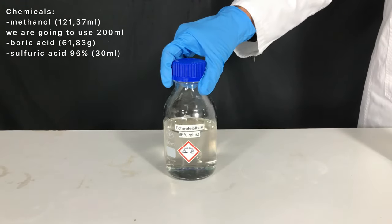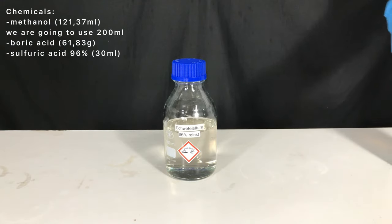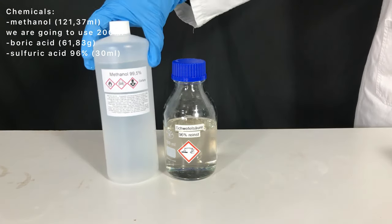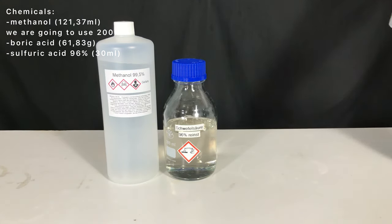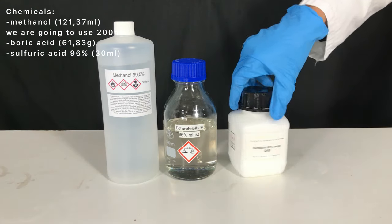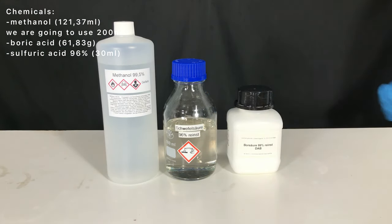Today we are going to make some tri-methyl borate. For this, 30 ml of sulfuric acid, 200 ml of methanol, and 61.83 grams of boric acid are needed.